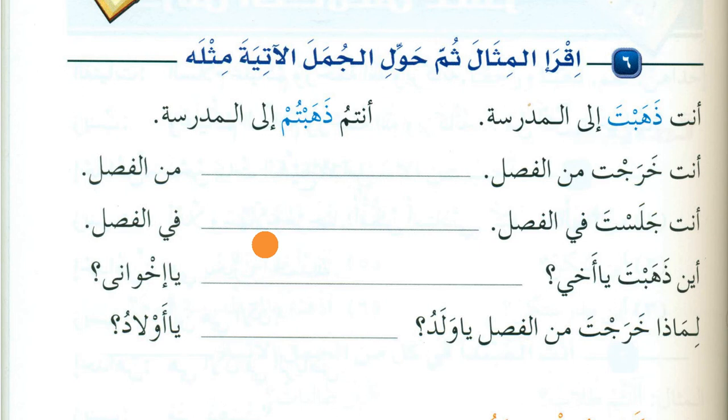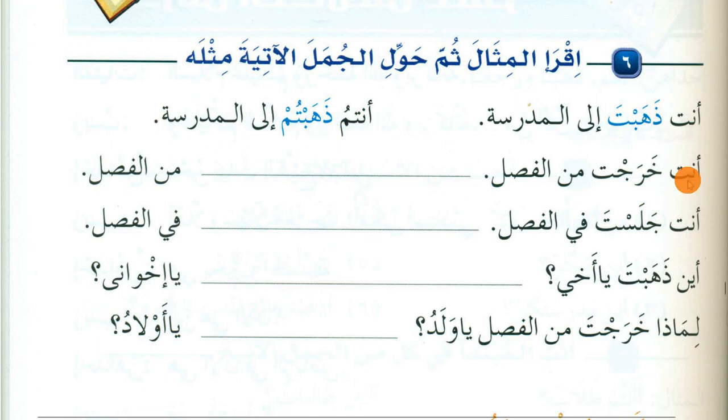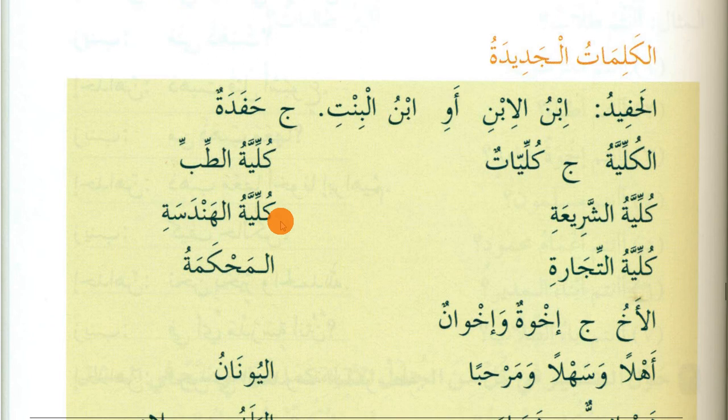Read the example then convert the following sentences like it. 'Anta dhahabta ilal madrasa' (you went to school) becomes 'Antum dhahabtum ilal madrasa' (you all went to school). 'Ta' means singular you, 'tum' means plural you all. Similarly: 'Anta kharajta minal fasl' (you went out from class) and 'Anta jalasta fil fasl' (you sat in class) become 'Antum jalastum fil fasl' (you all sat in class).